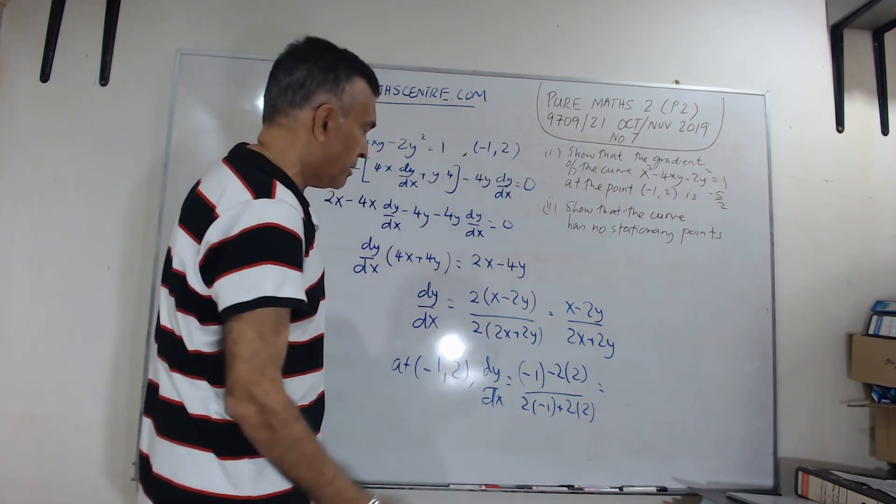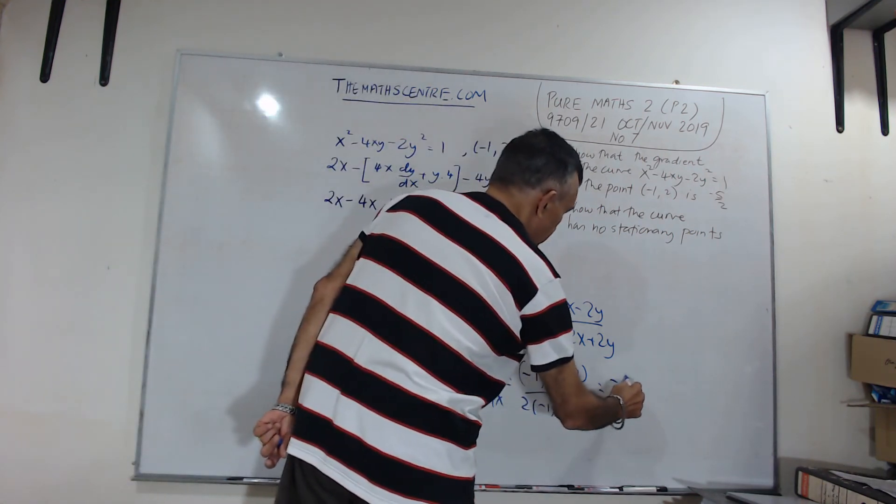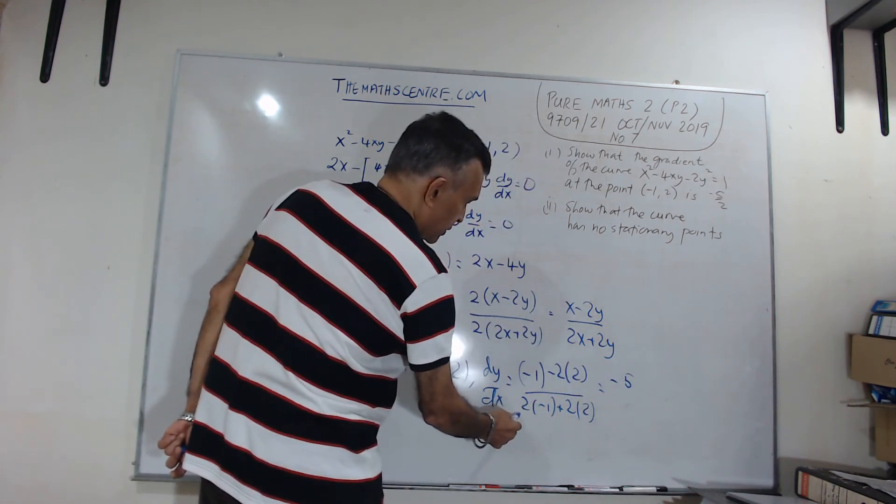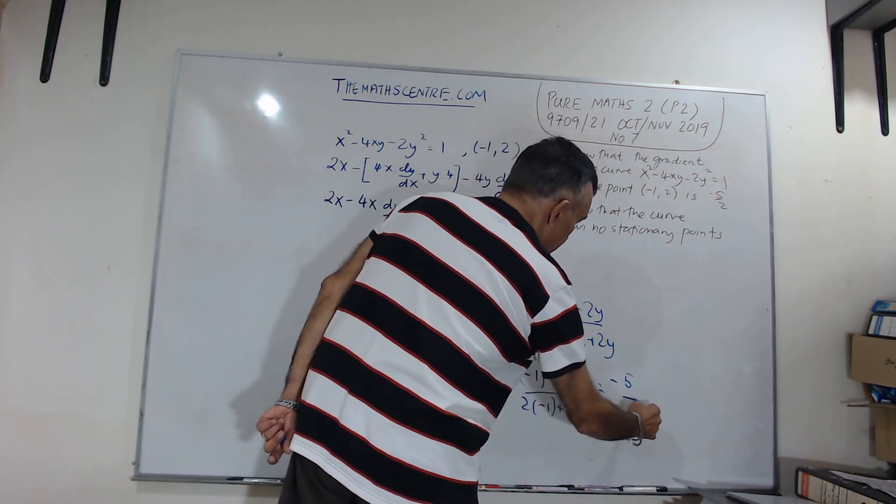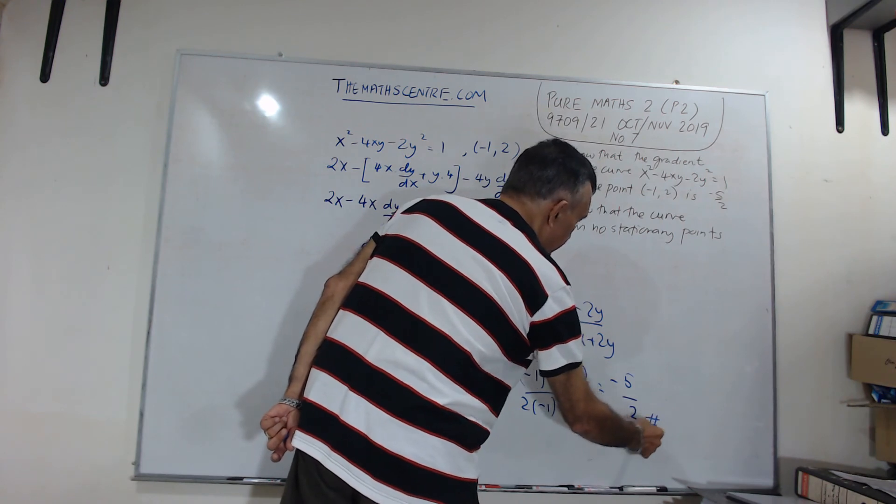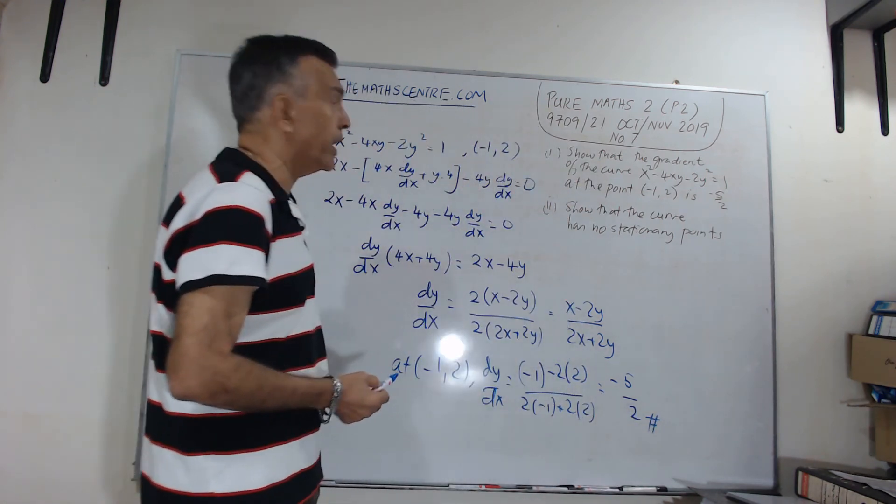I'll get -1 - 4 is -5. This -2 + 4, you will get 2. And, we have got the gradient as -5/2. And, we are done.